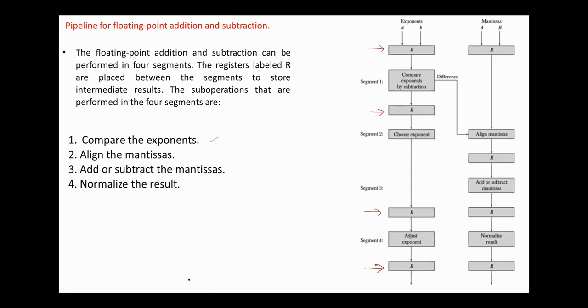compare the exponents, align the mantissas, add or subtract the mantissas, and normalize the result. The two exponents are subtracted in the first segment, and the largest exponent is chosen as the exponent of the result. The next segment shifts the mantissa of the number with the smallest exponent to the right by n positions, where n is the difference obtained.